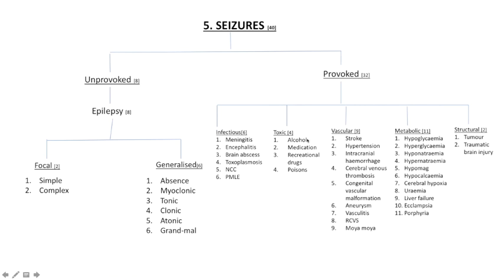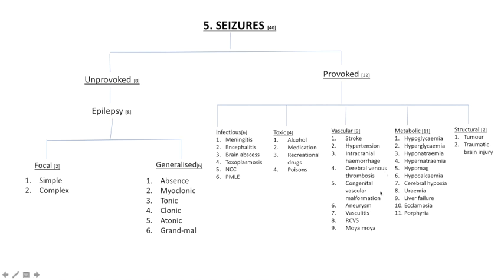In the toxic category: alcohol — both intoxication and withdrawal can induce seizures — medications that lower the seizure threshold, and recreational drugs and poisons. Vascular causes are quite varied: both hemorrhagic and ischemic stroke can cause seizures; hypertension, especially hypertensive encephalopathy presenting with posterior reversible encephalopathy syndrome in hypertensive emergencies; intracranial hemorrhage; cerebral venous thrombosis, notably superior sagittal sinus thrombosis; congenital vascular malformations such as AV malformations; aneurysms, which can also lead to dissection; vasculitis, which can be autoimmune or infectious; reversible cerebral vasoconstriction syndrome; and moyamoya.